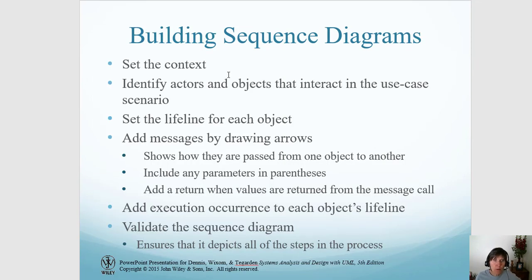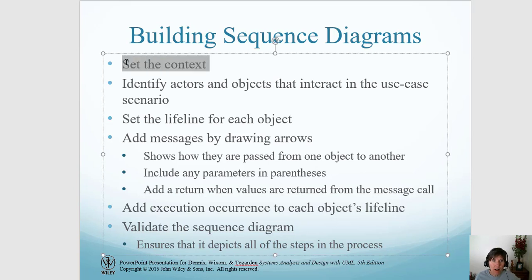Here's the process for building a sequence diagram. First, you set the context - this is to really define the use case scenario that's going to be demonstrated in the particular sequence diagram. Once you've created that, you identify the actors and objects that are going to be interacting in this scenario. Then set the lifelines and add any messages by drawing message lines with labels of the function call. You include any parameters in parentheses and then also add any return lines when there are values to be returned from the message call.